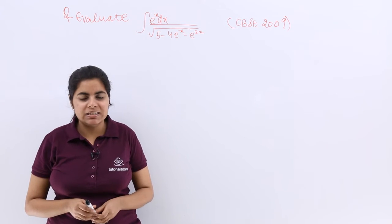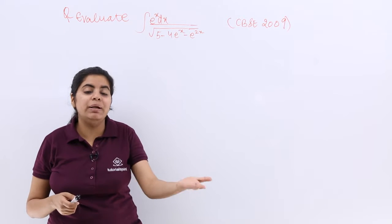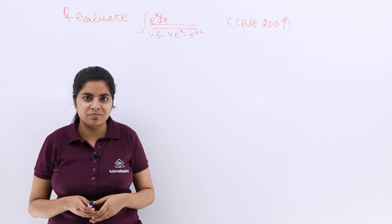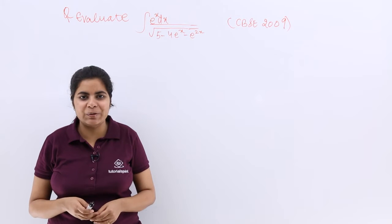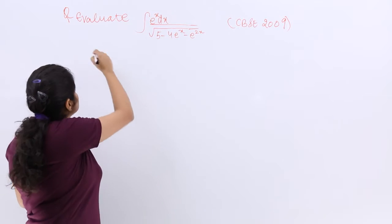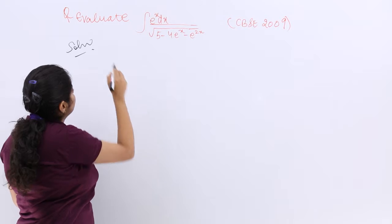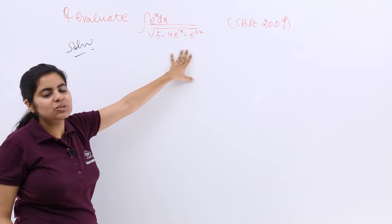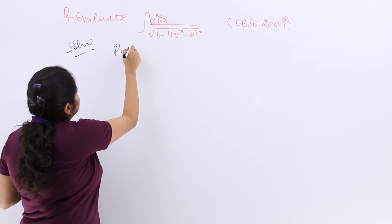So I know that if I have e raised to the power x again and again, better substitute it with some expression. Things become easy when solved in that way. Okay, so let me do it as follows. So I write solution and wherever I have e raised to the power x, let me please make it as t.